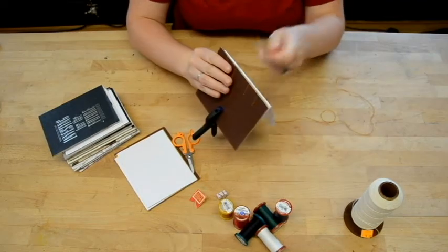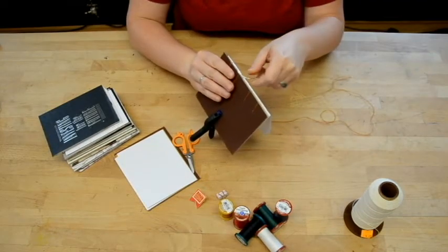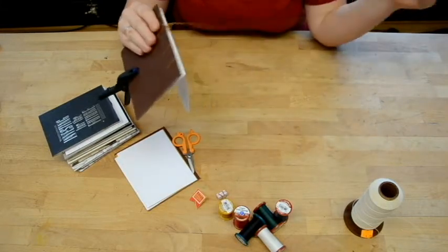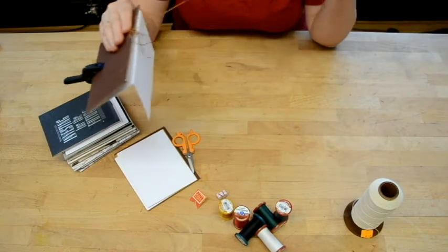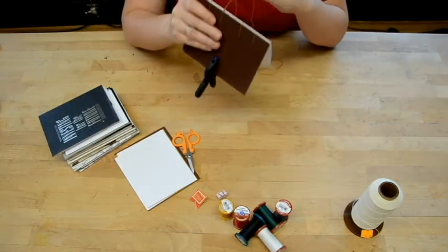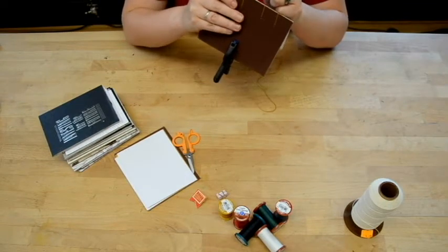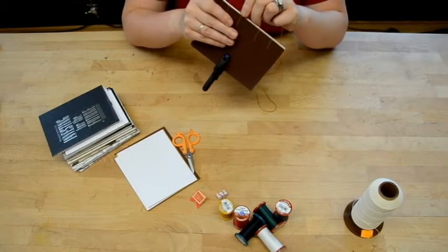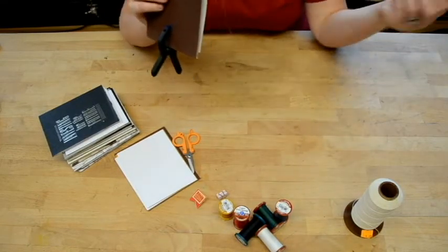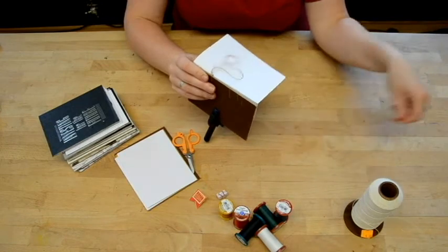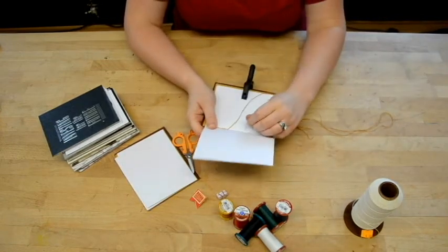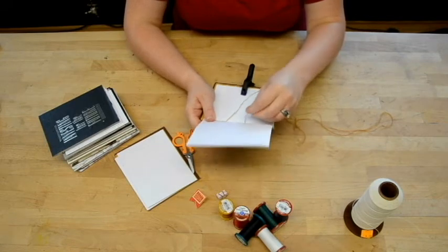And then from here, you loop around. You go down to the signature below, which in this case is the signature with the cover. That will not always be the case. You give it a nice tug, make it secure. Don't pull too hard. You can actually rip the paper, which is not fun. And then you go to the next hole. And you repeat this process.